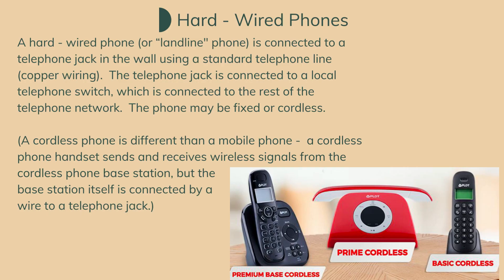A hardwired phone, or landline phone, is connected to a telephone jack in the wall using a standard telephone line or copper wiring. The telephone jack is connected to a local telephone switch, which is connected to the rest of the telephone network. The phone may be fixed or cordless. A cordless phone handset sends and receives wireless signals from its base station, but the base station itself is connected by a wire to a telephone jack. For a set monthly service fee, you can call anyone in your local calling area without additional charge. Calls outside your local area are long distance and usually incur an extra charge based on call duration.